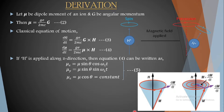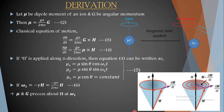We define omega_L as the Larmor frequency, given by: omega_L = minus gamma H, where gamma = gE/2mc is the gyromagnetic ratio from equation number 2. According to this equation, mu and G precess about the magnetic field H at Larmor frequency omega_L. This is how we interpret equation number 6.